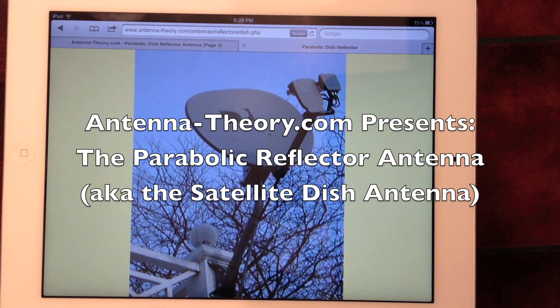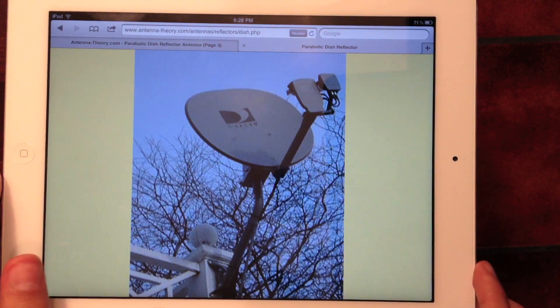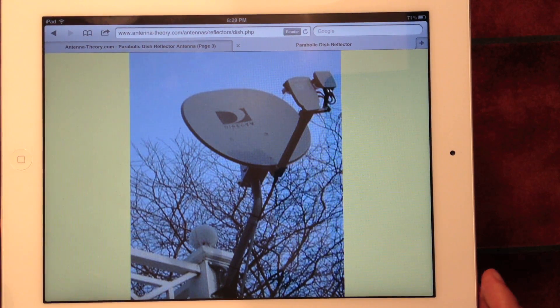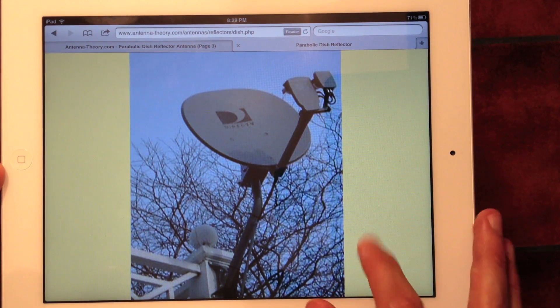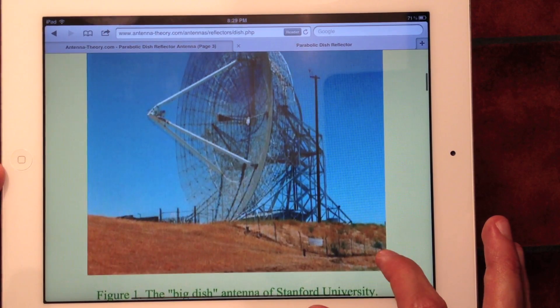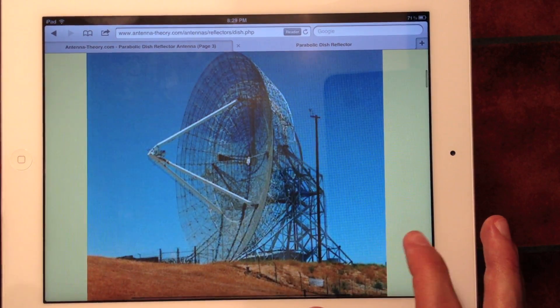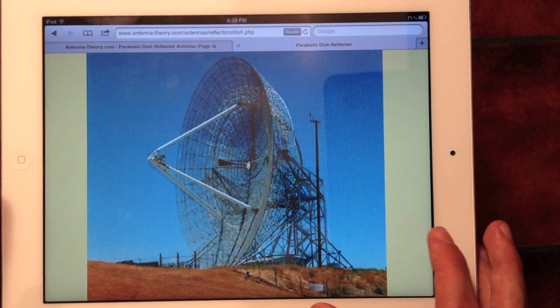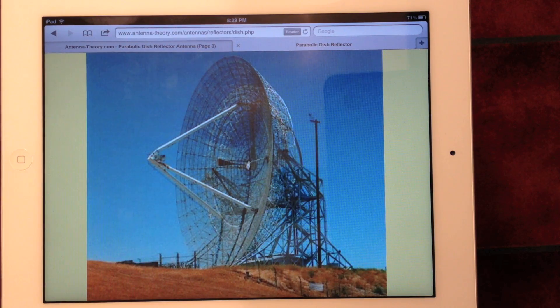Okay, in this video we're going to discuss the famous dish antenna, also known as a satellite dish antenna. It's commonly used for satellite TV, as in the case of this DirecTV dish, and in astronomy and remote sensing, as in this dish antenna, the big dish of Stanford University.